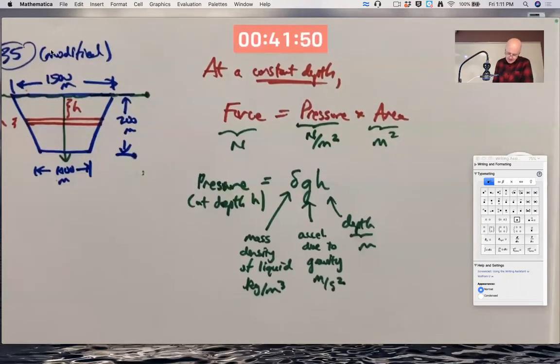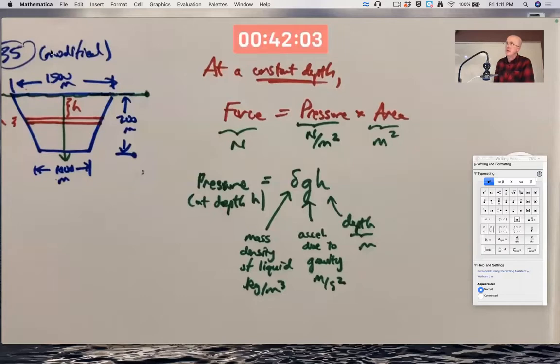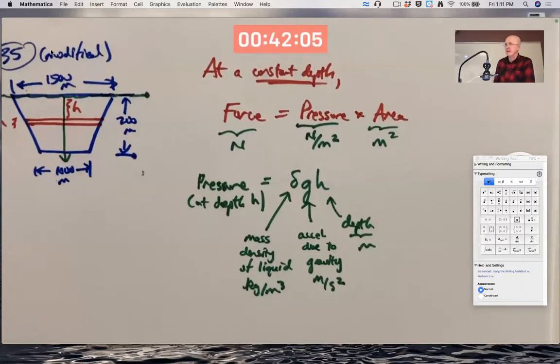And this does turn out to simplify to units of newtons per square meter. Though you've got to be, it's a little tricky to figure out. It's related to the fact that newtons is kilograms times meters per second squared. You've got to be able to use that fact.